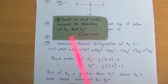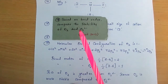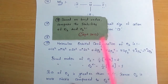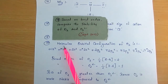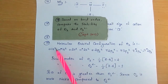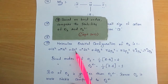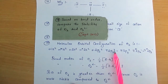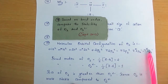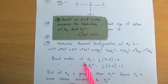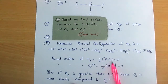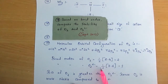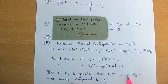The 19th question, asked in September 2013: based on bond order, compare the stability of O2 and O2²⁻. The molecular orbital configuration of O2 is: σ1s², σ*1s², σ2s², σ*2s², σ2pz², π2px² = π2py², π*2px¹ = π*2py¹. The bond order of O2 = ½(8−4) = 2. The bond order of O2²⁻ = ½(8−6) = 1. Since the bond order of O2 is greater than O2²⁻, O2 is more stable compared to O2²⁻.